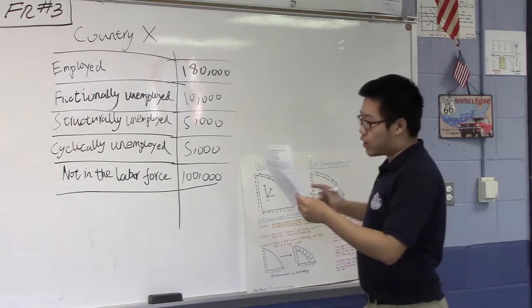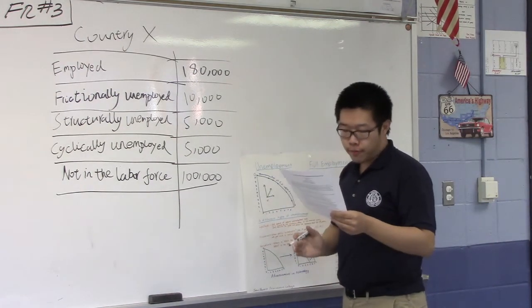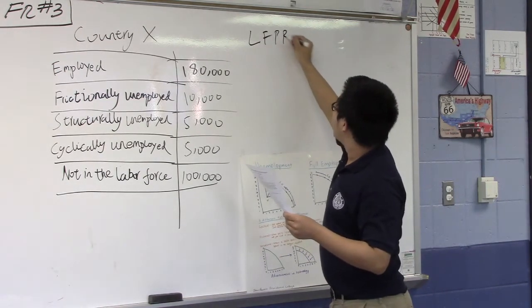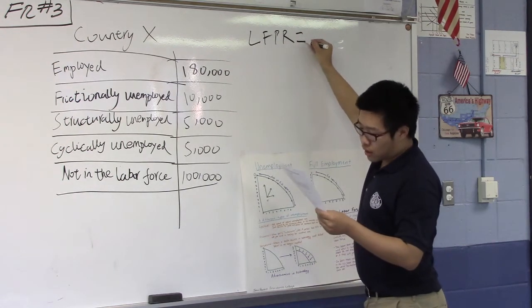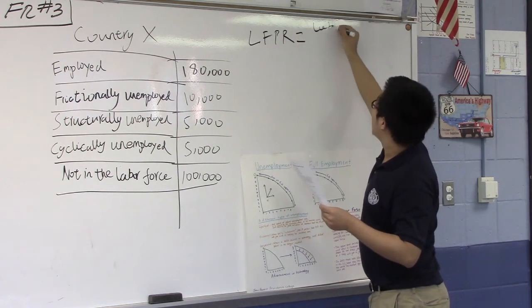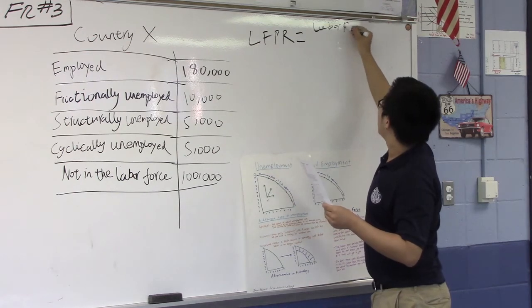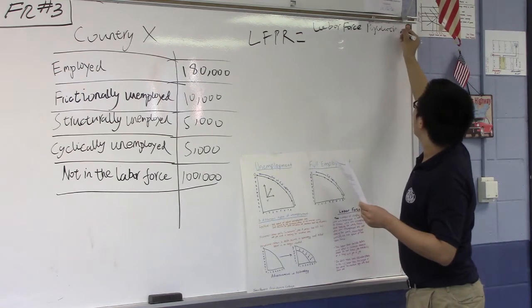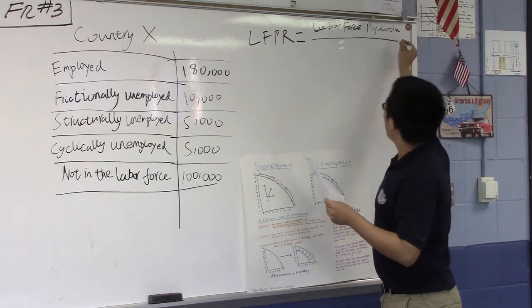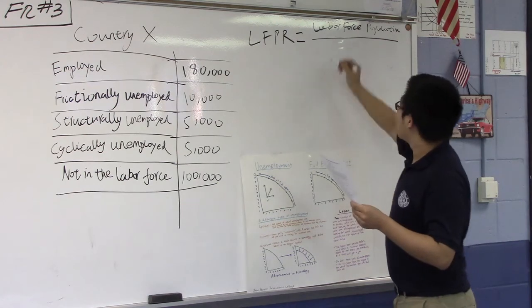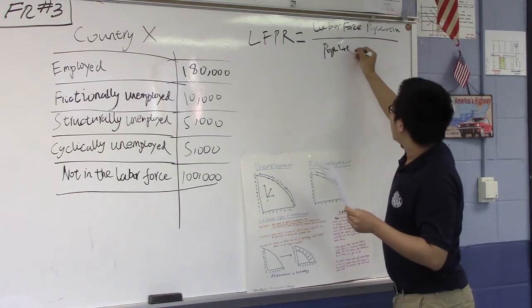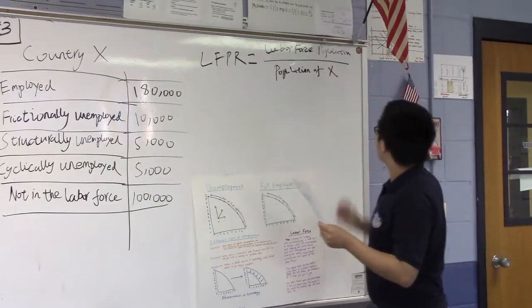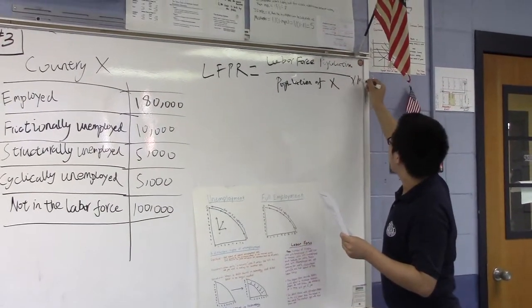Since now we are looking for the labor force participation rate, basically we are looking for the labor force population, the numerator, and the whole population of the country—and here is country X—that's the denominator. Still, we got to times this by 100.